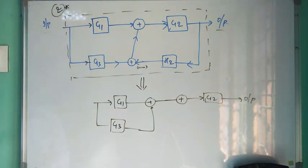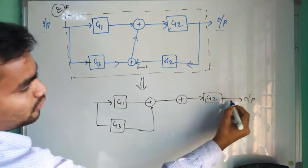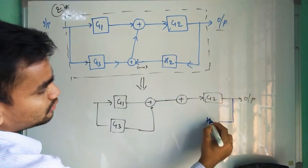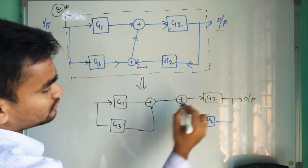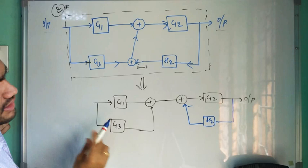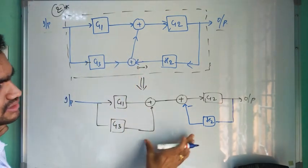Now I will represent this feedback. You can see that this is getting negatively added, so I can write this h2 here with a negative sign. Now you can see that the functionality is not changed and here is the input by writing this diagram in this format.